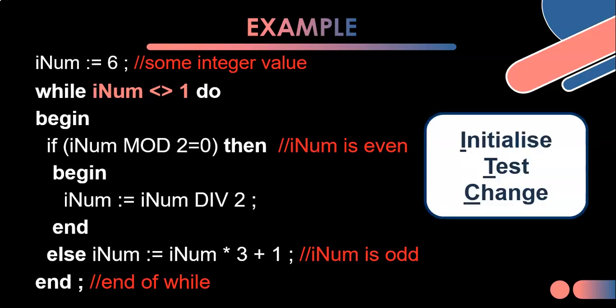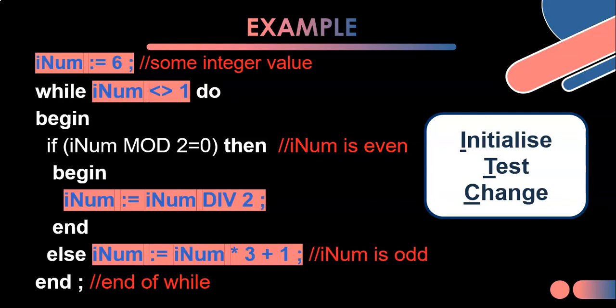So that makes, does that make sense for our sequence? Now what's the initialize test change? What's the ITC principle? Well, it's iNum. We started with a default value or the user can give it, for example. So it's got a default value before it enters the loop. And then we test. So while it's not a 1, keep doing the loop. And then inside it, we change it. But we change it in two ways. We either divide it by 2 or we multiply it by 3 and add 1. So it doesn't matter that we've got multiple ways as long as it's changing. And it's going to keep doing those changes until iNum becomes a 1 and that will make it stop.